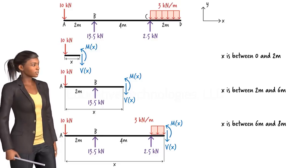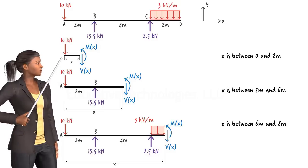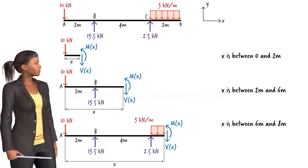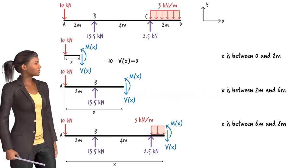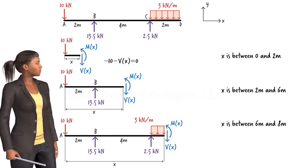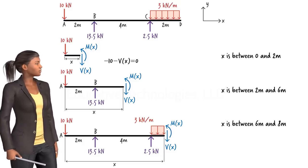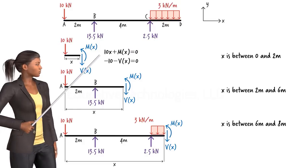Using each of these diagrams, we can write a shear equation and a moment equation for each beam segment. For the segment in which X is between 0 and 2 meters, we can write the sum of the forces in the Y direction and set it to 0. This gives us an expression in terms of VX. Now, let's write the moment equilibrium equation about the cut point. Here, we get an equation in terms of MX.